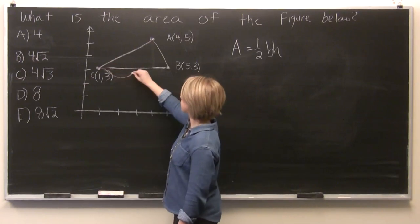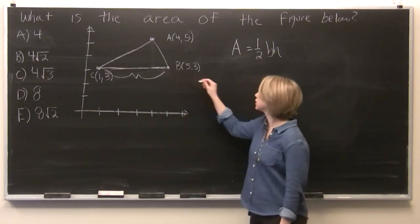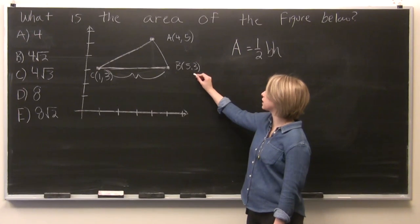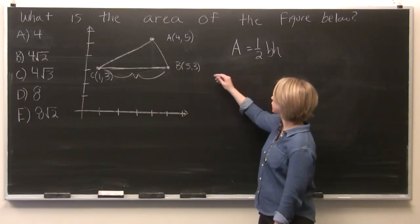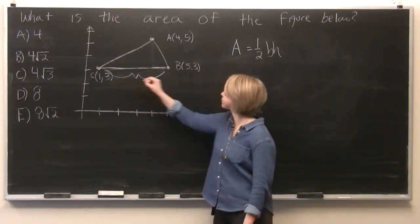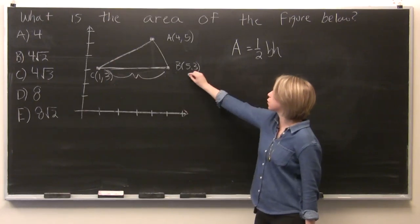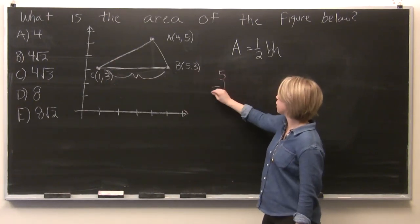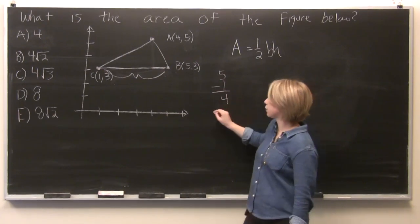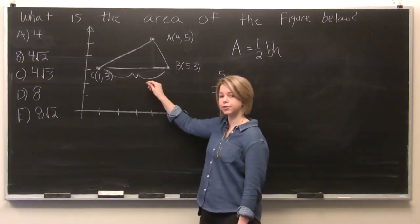We know that the base is going to be this section of the triangle. And to find it, we simply subtract the x values of coordinates b and c. So we take b's coordinate value, 5, minus 1, and we see that b is 4 units long.